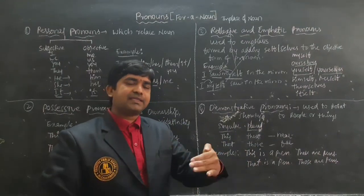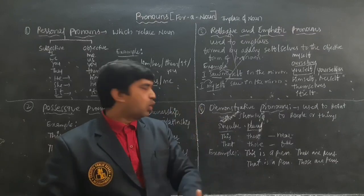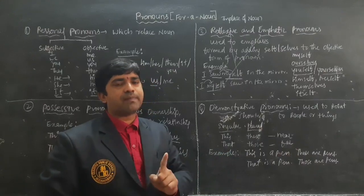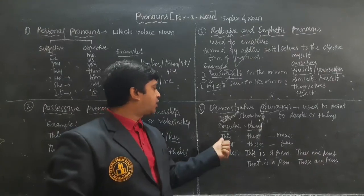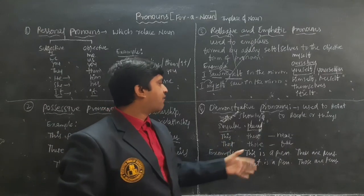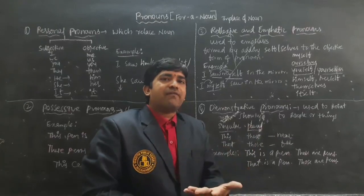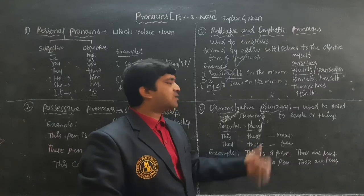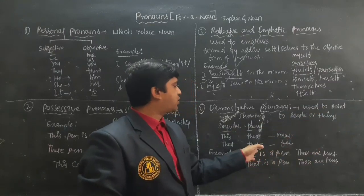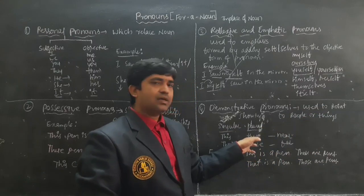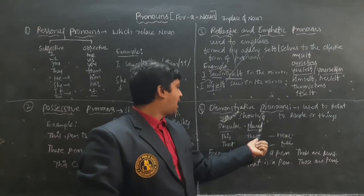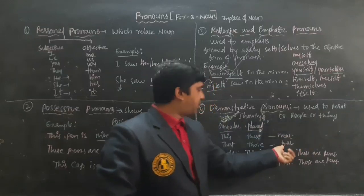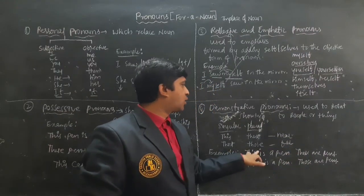The Demonstrative Pronouns are: this, that, these, those. For singular we use 'this' or 'that.' When speaking about one person or one thing, we use 'this' or 'that.' 'This' is used when something is near, 'that' when it is far. For plural and near, we use 'these'; for plural and far, we use 'those.'